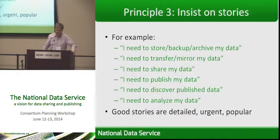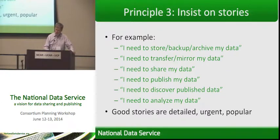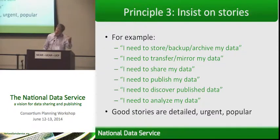Third principle: insist on stories. We've all got ideas of what we want an NDS to do. Some of them are very crisp and detailed, some very urgent in the sense that if we can't do this thing, we're going to fail in our science. Others are perhaps more vague and ill-defined. I think we need to be insisting on identifying the simple, detailed, urgent, and popular stories that we can then work to support in our national data service. My preference would be to start with the simple things first — things like: I need to store my data somewhere where I can still find it next week, or I need to transfer my data from one place to another, or I need to assign an identifier to this data. These are pretty primitive, basic operations, but they are still far too difficult — they're the friction in the work that people want to undertake.